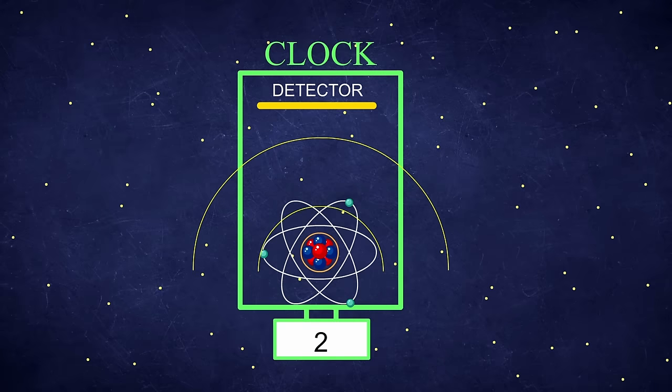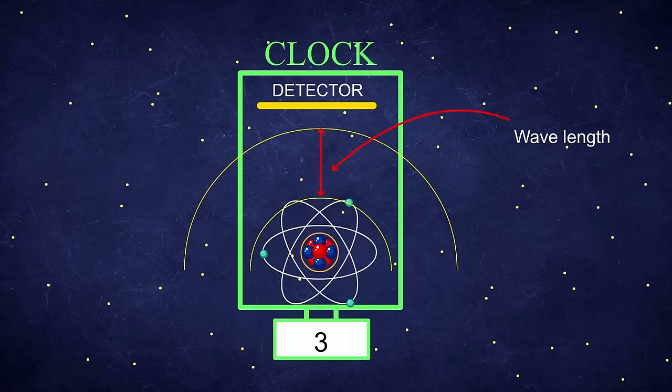But what if we had a version of atomic clock that would be using sound waves instead of light waves? Well, in this case, we would count the number of oscillations in the created sound waves.